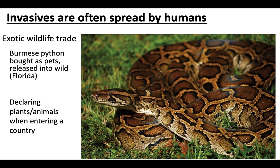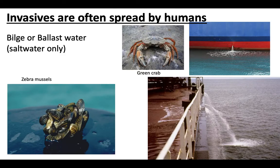When invasive species are introduced to a new ecosystem, it's almost exclusively done by humans. Whether through the exotic wildlife trade — the Burmese python is an invasive species in the Florida Everglades because people bought them as pets and released them into the wild when they didn't want them anymore — or through bilge and ballast water. Ships fill their hulls with water for balance and buoyancy, potentially sucking up larvae, then emptying that water elsewhere. That's how things like the green crab and zebra mussels have infiltrated the United States and become invasive.